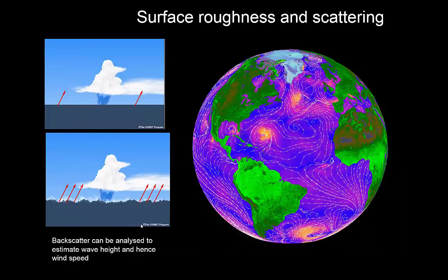We can also use the backscatter to look at things like wave height. Roughness determines how much of the radiation goes back towards the sensor, so for a very smooth surface there would be very little, and if there are very high waves there'd be comparatively a lot being sent back to the sensor. So we can infer things like wave height and wind speed from radar measurements, which is pretty cool.